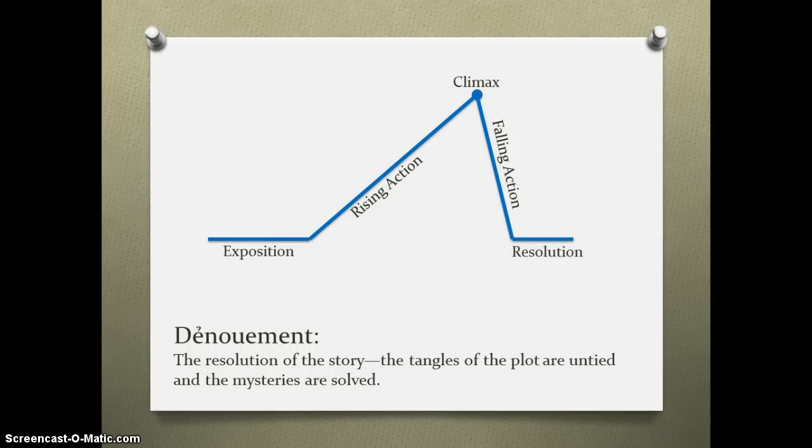Next, you'll have the denouement or the resolution. The resolution of the story where the tangles of the plot are untied and the mysteries are solved. Now when we say mysteries are solved, we don't mean that it's necessarily a clean ending. We can always have a cliffhanger for our audience as a way to let them think about what's happening. But overall, the tangles of the plot are untied and mysteries are resolved for our story. What we set out to do is entirely resolved and we have the intended effect on the audience as well.